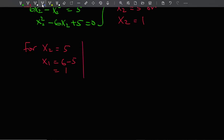Okay, what else? For x2 equals 1, then x1 equals—what's that?—6 minus 1, which is 5. So let's go.